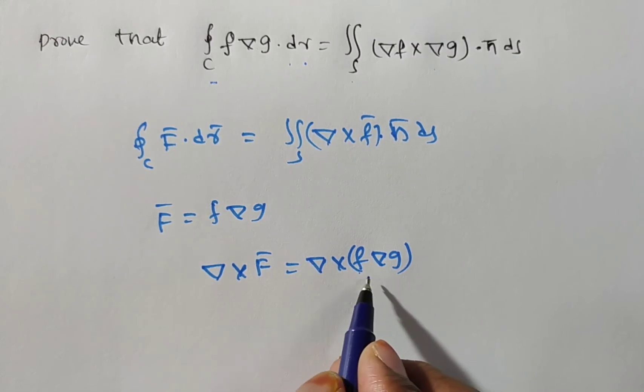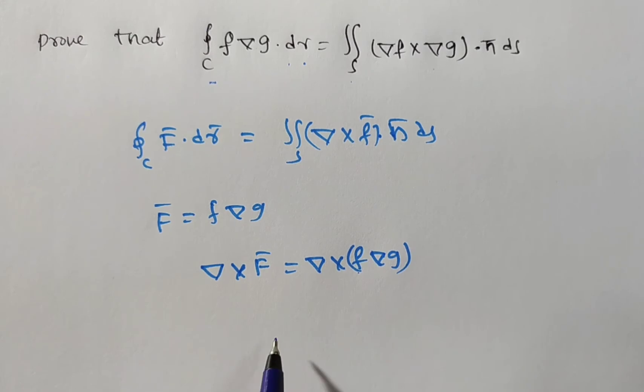F is a scalar. Del f g is nothing but here what? A vector. Now cross product of the vectors we are doing.